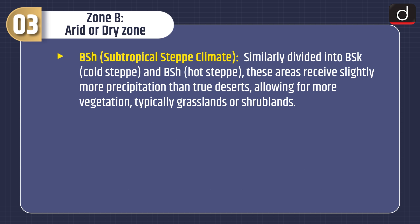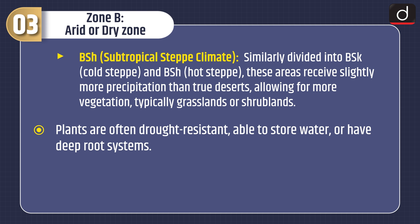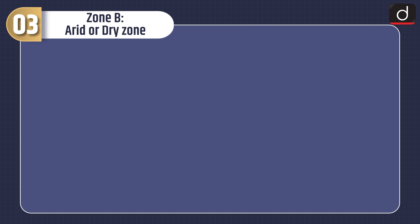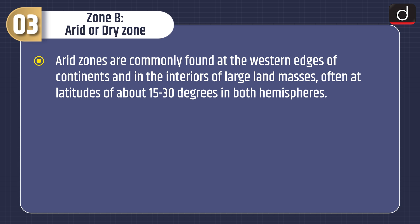BSH Subtropical Steppe Climate is similarly divided into BSK Cold Steppe and BSH Hot Steppe. These areas receive slightly more precipitation than true deserts, allowing for more vegetation — typically grasslands or shrublands. Plants are often drought-resistant, able to store water or have deep root systems. The Gobi Desert in Mongolia, for example, experiences very cold winters, classifying it as a cold desert. Arid zones are commonly found at the western edges of continents and in the interiors of large land masses, often at latitudes of about 15 to 30 degrees in both hemispheres.